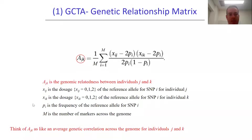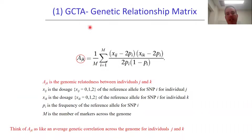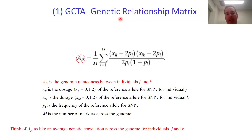In this lecture, we're going to be talking about how to calculate the genetic relationship matrix. Think of this matrix as a big n by n matrix where n is your sample size, and each element of that matrix is going to contain the pairwise genome-wide genetic similarity between each pair of individuals in your sample.